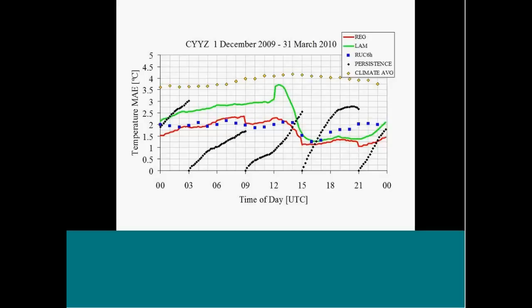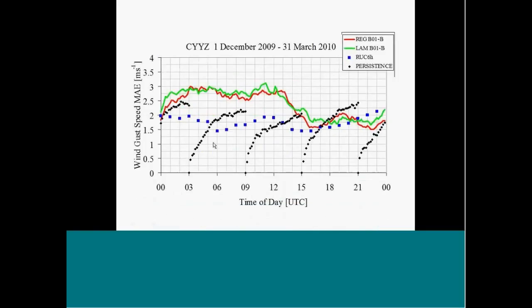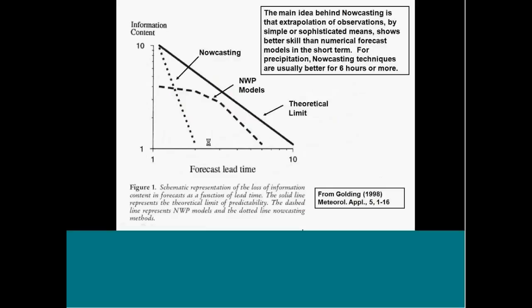And in this case here, maybe after about five hours, the model is doing better than persistence. But it changes as a function of time of day. As you can see here, maybe it only takes a couple hours before the models take over from persistence. This just shows you that for wind gusts, the same kind of thing. And in this case, the models were not doing very well at these times of days. At least the Canadian models, the US RUC model was doing much better. But as you went into these times, the models were doing better. So verification should be done at the time of day.